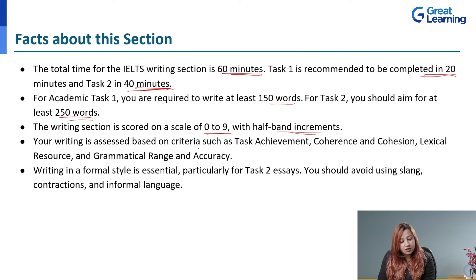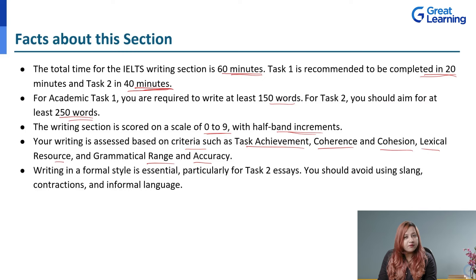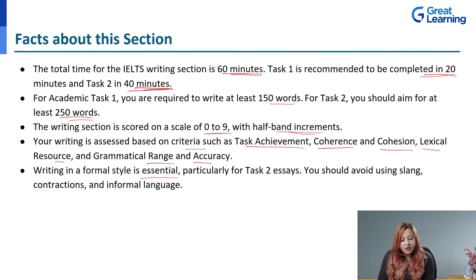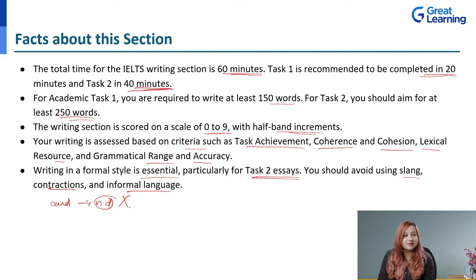Your writing is assessed based on criteria such as task achievement, cohesion and coherence, lexical resource, and grammatical range and accuracy. These four criteria will be learned in detailed manner in the writing modules. Writing in a formal style is essential, particularly for Task 2 essays. You should avoid using slang, contractions, and informal language — for instance, avoid writing '&' instead of 'and'. The tone of the writing must always be formal.